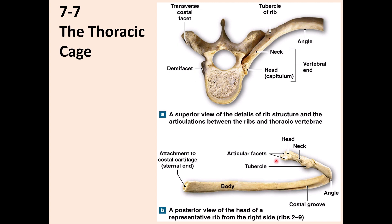Going back to this image, you can see the articular facet of the head, which articulates with the costal facet — the superior costal facet of the thoracic vertebra. This is the neck, the area that does not articulate with the vertebra, and then you have the tubercle, which articulates with the transverse costal facet. From there it curves posteriorly, then comes back anteriorly, where the tip of the rib body contains cartilage that connects with the sternum at the midline.